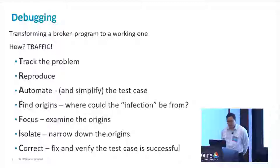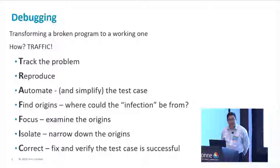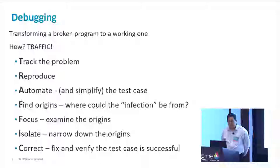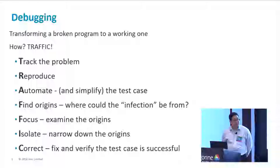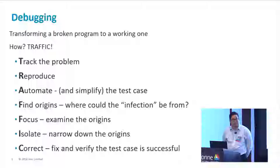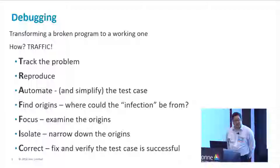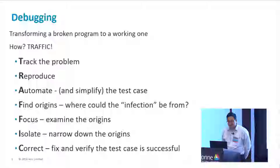When it comes to debugging, it's really about transforming your broken code into something that works. The way you can do that is to follow these six techniques with the acronym TRAFFIC. One, track the problem. It's always helpful to write down what you're doing if you encounter a problem in your code. Chances are you might run into that same problem again in the future. It's always helpful to log it, whether it's in a notebook or some type of tracking system.